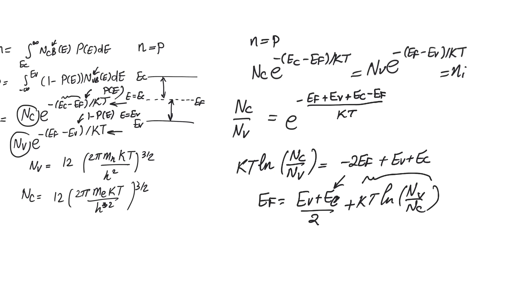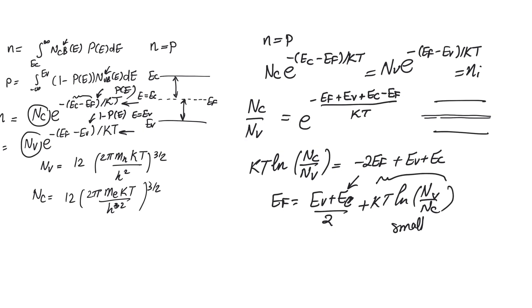This correction term is positive because N_V is greater than N_C, so E_F is slightly above the middle of the band gap. We need to explain why. The second term contains ln(N_V / N_C) multiplied by kT, which is 25 meV, while (E_C + E_V)/2 is roughly 0.55 eV — that is E_G/2. So the second term is small relative to the first, and we conclude that the Fermi level is not exactly at the middle but slightly above it.